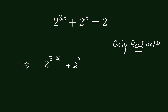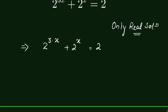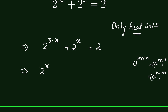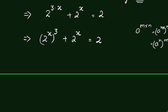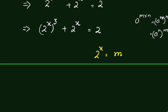So plus 2 to the power x is equal to 2. Now when a raised to the power m times n, we can write it as a raised to the power m, whole raised to the power n — also as a raised to the power n, whole raised to the power m. So this we can write as 2 raised to the power x, whole raised to the power 3, plus 2 raised to the power x is equal to 2. Now let us consider 2 to the power x is equal to m.